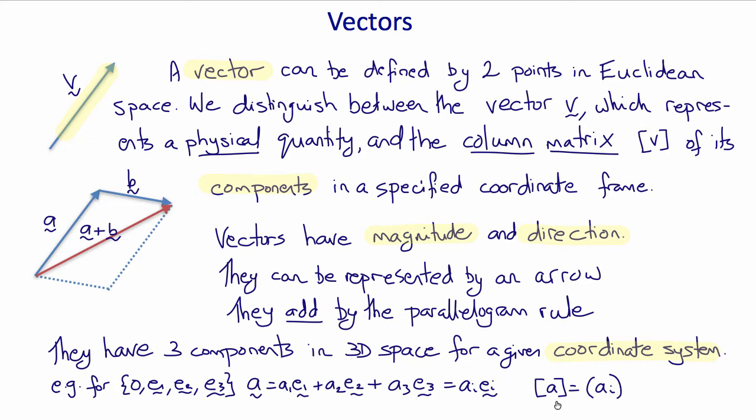The matrix a, a column matrix, is the matrix of the components of the vector. Note that the matrix does not include the coordinate system. So the matrix is not the same as the vector. The vector is the components and the coordinate system. With a different coordinate system, there would be different components.